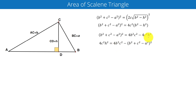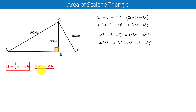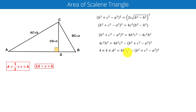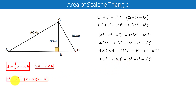Taking negative 4c squared times h squared to the left-hand side and remaining terms to the right-hand side. Since the area of a triangle equals one half times c times height, we can write 2A equals c times h. Substituting the value of ch with 2A, we get 4 times 4A squared, and 4b squared c squared can be written as (2bc) squared. We apply the identity x squared minus y squared equals (x plus y)(x minus y).